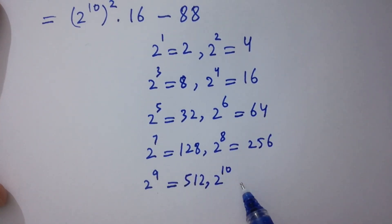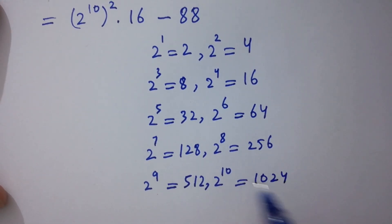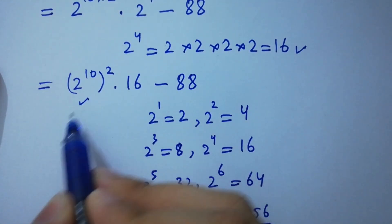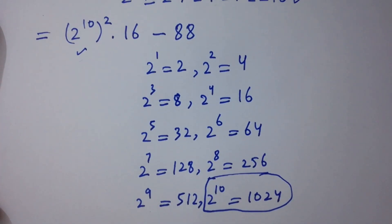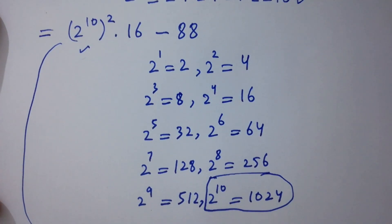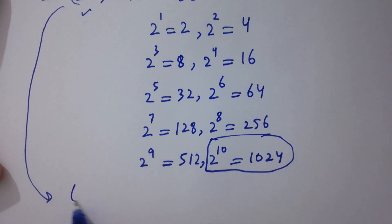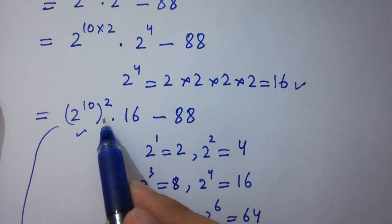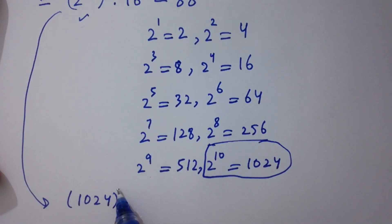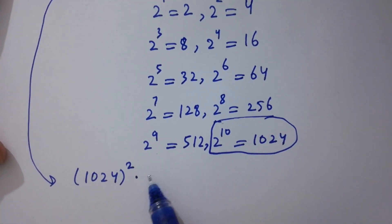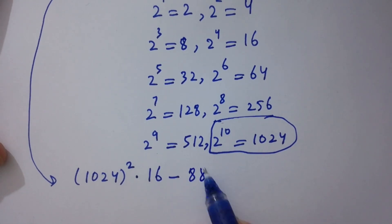2 to the power 10 equals 1024. So 2 to the power 10 is equal to 1024. It will be equal to 1024, that is 2 to the power 10 to the whole power 2, times 16, minus 88.